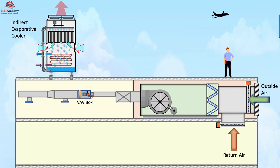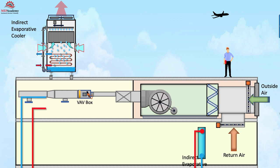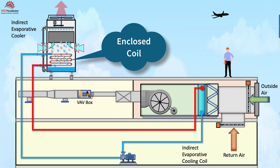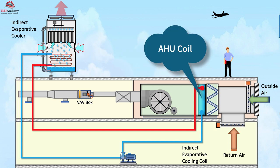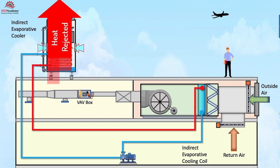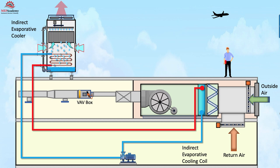Indirect evaporative cooling using a fluid cooler. There is another method of providing indirect evaporative cooling by providing a fluid cooler that feeds a cooling coil within an air-handler. The fluid cooler provides indirect cooling by spraying water over an enclosed coil that circulates water through an air-handler. The coil in the air-handler absorbs heat from the space or outdoor air and circulates it to the tower where it gives up its sensible heat to the cool, moist air. The water circulated in the indirect evaporative cooler never mixes with the water circulated in the air-handler coil.